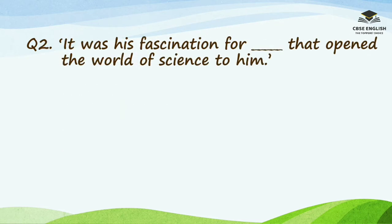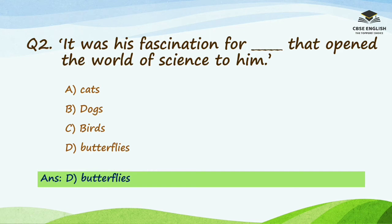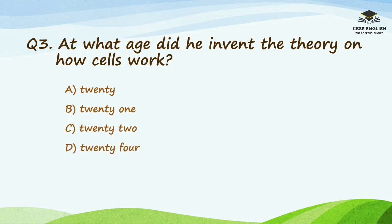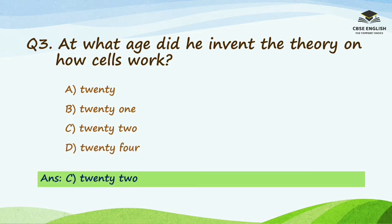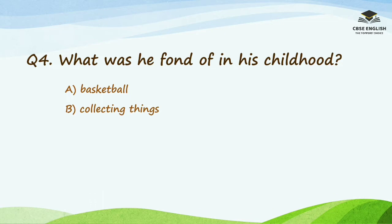Question number two: it was his fascination for blank that opened the world of science to him. Options are cats, dogs, birds, or butterflies. The right option is butterflies. Question number three: at what age did he invent the theory on how cells work? Options are 20, 21, 22, or 24. The right answer is 22.